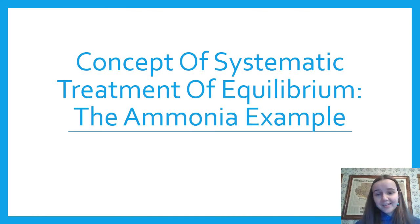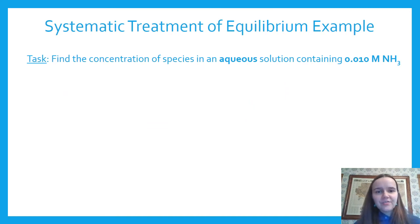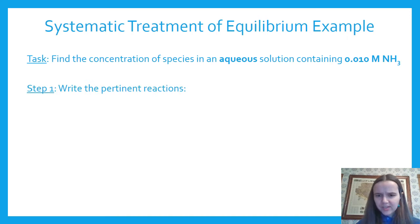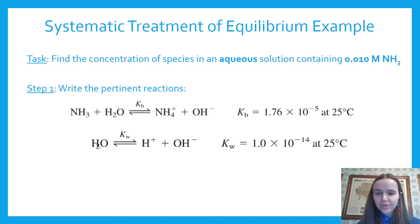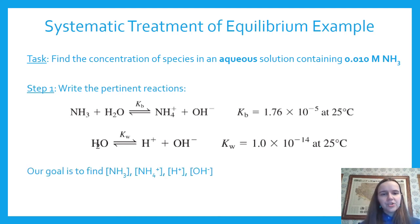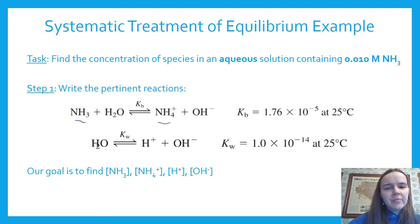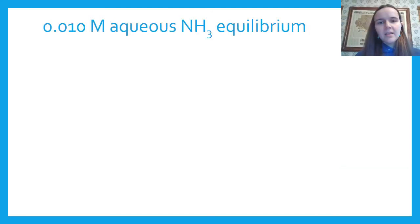The ammonia example: find the concentrations of all ionic species in 0.01 M aqueous ammonia. Step 1 — write the reactions: ammonia is a base and can abstract a proton from water to make ammonium NH₄⁺, with equilibrium constant Kb; and water autoprotolysis gives Kw. Our goal is to find the concentrations of NH₃, NH₄⁺, OH⁻, and H⁺.